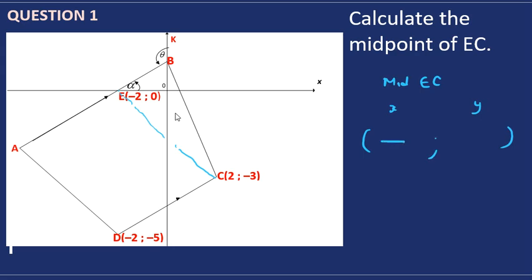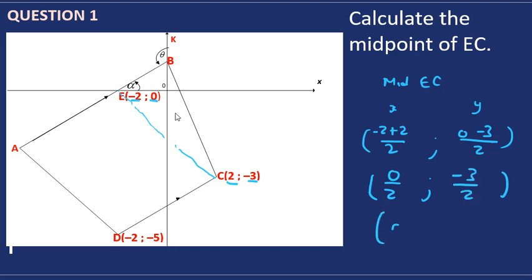To get the x-coordinate we add the two x-coordinates from E to C: minus two plus two, and divide by two. For the y-coordinate we add the two y-coordinates from E to C and divide by two. Simplifying, we get zero over two and minus three over two, which is zero and negative three over two. That is our midpoint of EC.